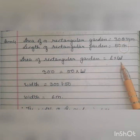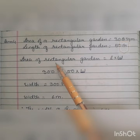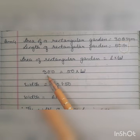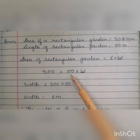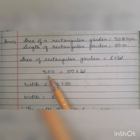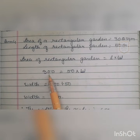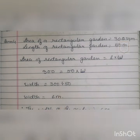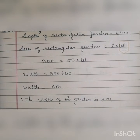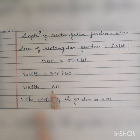The area of the rectangular garden is L × B. So 300 = 50 × breadth. To find the breadth, breadth = 300 ÷ 50. Dividing 300 by 50 we get 6 meters. So the breadth of this rectangular garden is 6 meters.